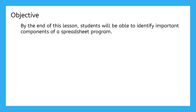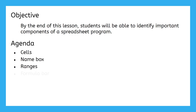By the end of this lesson, you'll be able to identify important components of a spreadsheet program. Specifically, we'll be talking about cells, the name box, ranges, and the formula bar. I'll also show you where the formatting options are found so we can make your budget look nice and organized when it's all done.